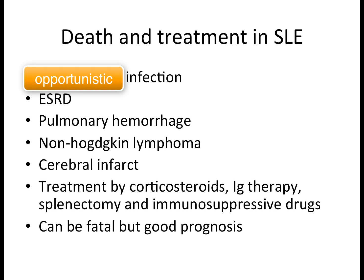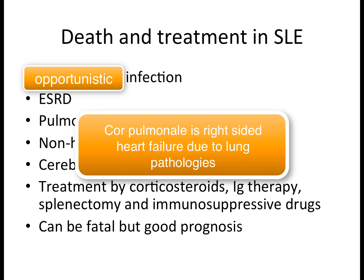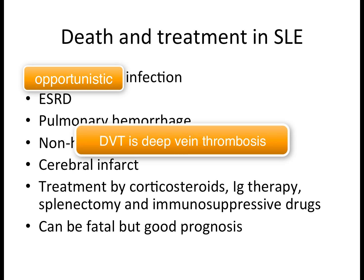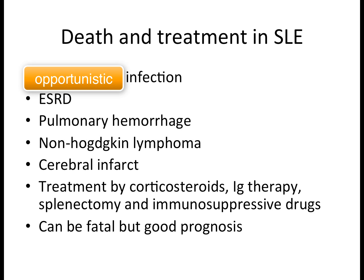Pulmonary fibrosis forces the right ventricle to work harder, leading to it enlarging and eventually failing — a condition called cor pulmonale. SLE can also cause cerebral lymphomas such as non-Hodgkin lymphoma, and cerebral infarcts from multiple thromboses in cerebral vessels. Deep vein thrombosis (DVT), usually in the lower limbs, can eventually result in pulmonary embolism.